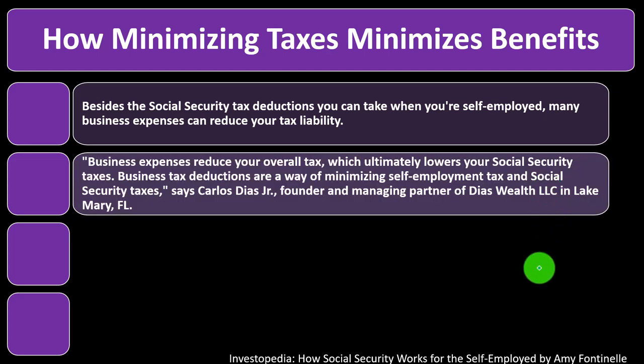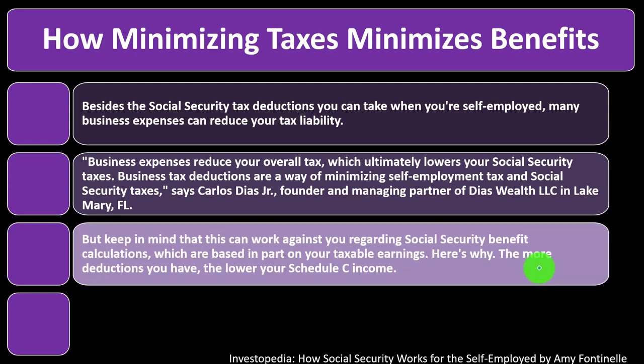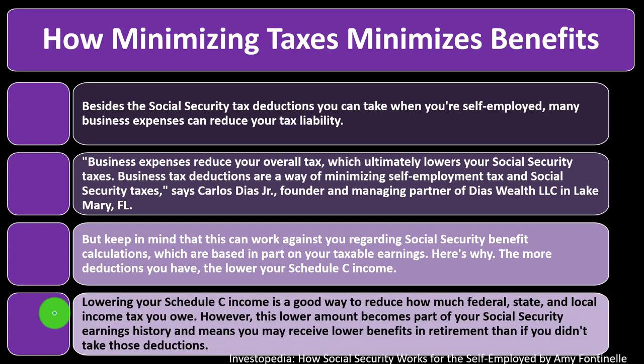Business expenses reduce your overall tax, which ultimately lowers your Social Security taxes. Business tax deductions are a way of minimizing self-employment tax and Social Security taxes — says Carlos Dios Jr., founder and managing partner of Dios Wealth LLC. But keep in mind that this can work against you regarding Social Security benefit calculations, which are based in part on your taxable earnings. So if you lower the Social Security taxes you're paying, you might be lowering the benefits you're going to get. The more deductions you have, the lower your Schedule C income, which reduces income taxes owed. However, this lower amount becomes part of your Social Security earnings history and means you may receive lower benefits in retirement than if you didn't take those deductions.